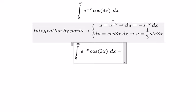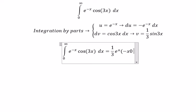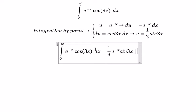So we have u multiplied by v. That is one-third e to the negative x sine 3x, and we put the bounds in here.